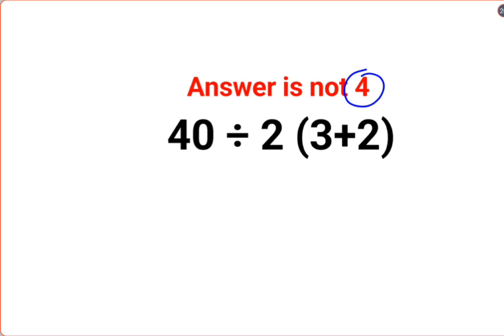A lot of people think that this is 40 divided by 2, and in brackets we have 3 plus 2. Please understand, in these kinds of sums we will either follow the rules of BODMAS or PEMDAS.